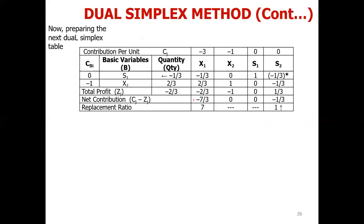Now in the updated table, we recalculate ZJ: quantity multiplied by the coefficient of the basic variable, plus quantity multiplied by the coefficient of the basic variable. Against X1, we calculate ZJ using X2, S1, and S2 columns. CJ minus ZJ gives: minus 7/3, then minus 1, minus 1, and 0.